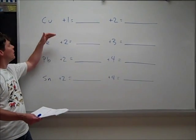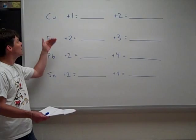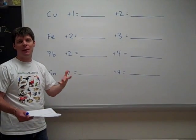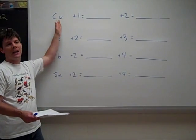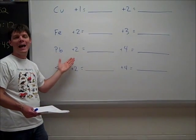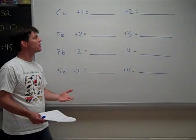So the Latin naming system, there are certain elements whose symbols are derived from their Latin names: copper, iron, lead, and tin. The Latin name for copper is cuprum, for iron, ferrum, for lead, plumum, and for tin, stanum. So we can see where those symbols come from.